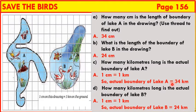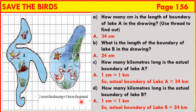Exercise D: How many kilometers long is the actual boundary of Lake B? In the figure, 1 centimeter equals 1 kilometer. So the actual boundary of Lake B is 24 kilometers.